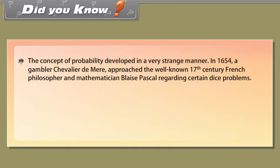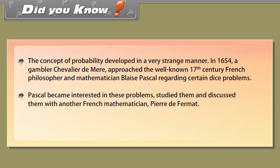Did you know? The concept of probability developed in a very strange manner. In 1654, a gambler Chevalier de Maire approached the well-known 17th century French philosopher and mathematician Blaise Pascal regarding certain dice problems. Pascal became interested in these problems, studied them and discussed them with another French mathematician Fermat. Both Pascal and Fermat solved the problems independently. This work was the beginning of probability theory.